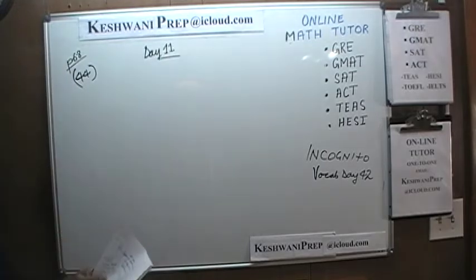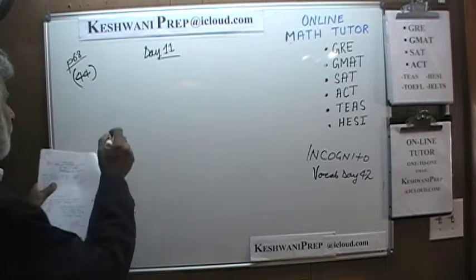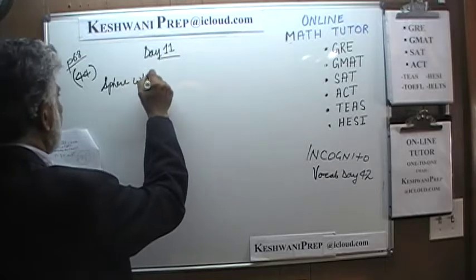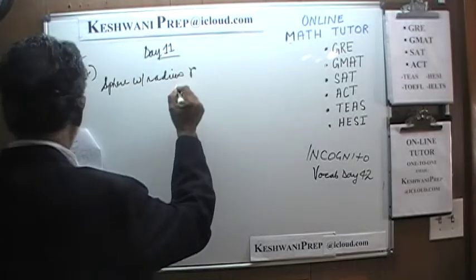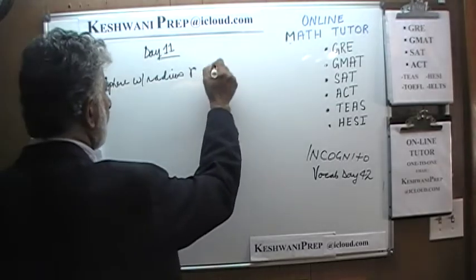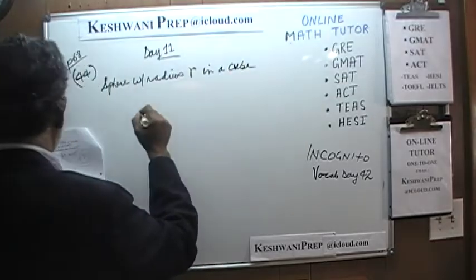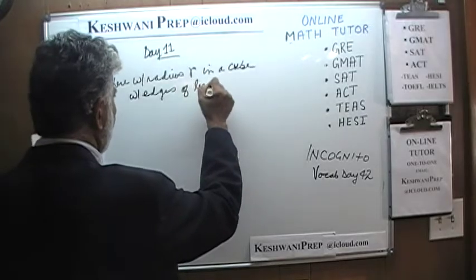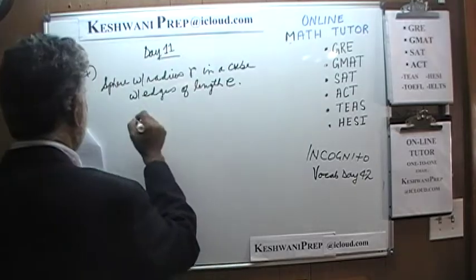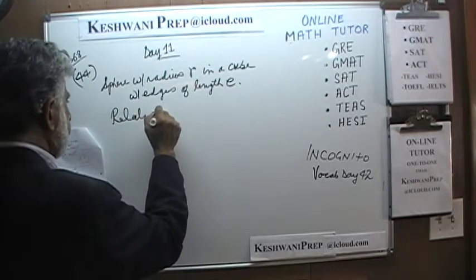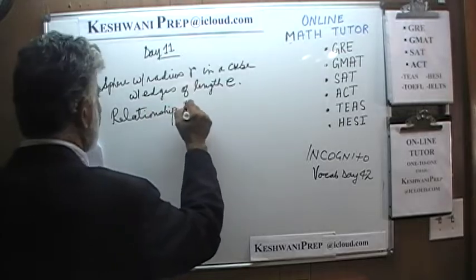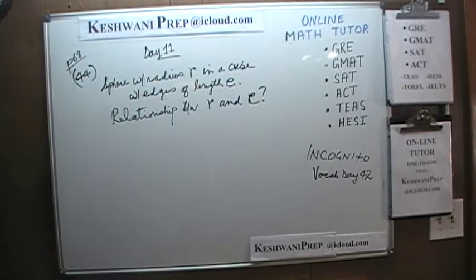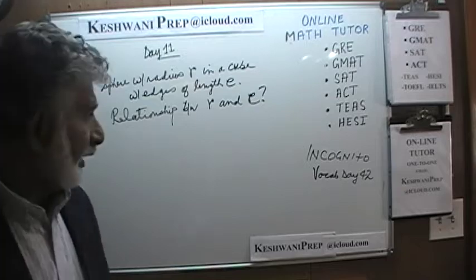Number 44 says we have a sphere with radius r inscribed in a cube with edges of length e. The question is: what is the relationship between r and e?